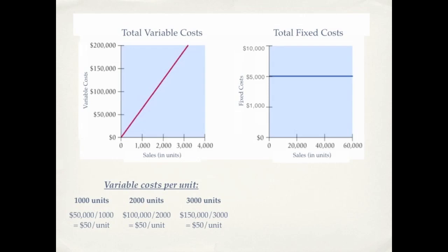Let's look at fixed costs and we'll take a few of their activity levels as well: 20,000 units and 40,000 units. Fixed costs at 20,000 units is $5,000. So on a per unit basis, that's 25 cents per unit.